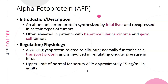Alpha-fetoprotein (AFP) is an abundant serum protein synthesized by the fetal liver in utero, and is re-expressed in certain types of tumors. It is often elevated in patients with hepatocellular carcinoma and germ cell tumors. It is a 70 kilodalton glycoprotein related to albumin, and normally functions as a transport protein, also involved in regulating oncotic pressure in the fetus.